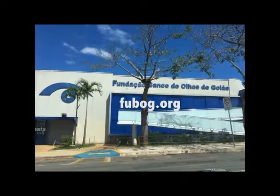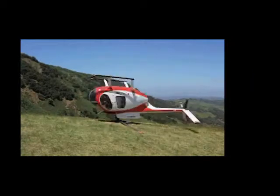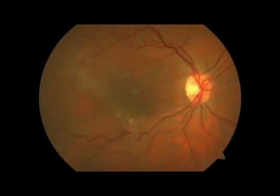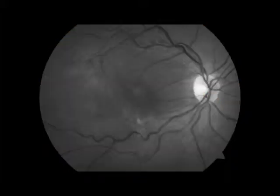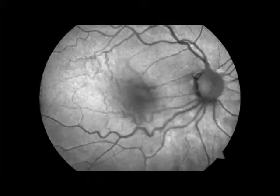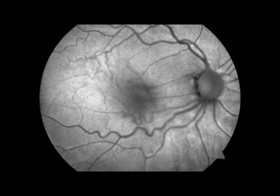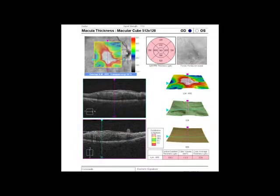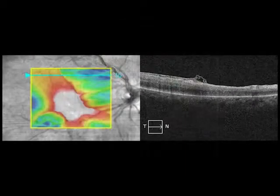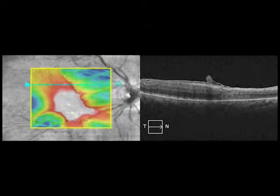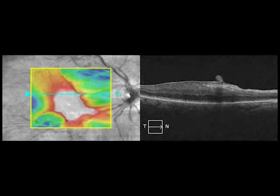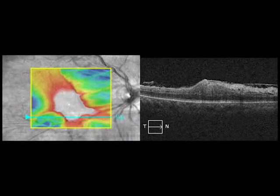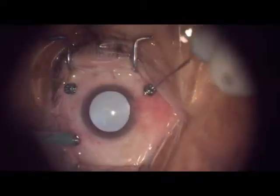This is an inverted vitrectomy epiretinal membrane peel with brilliant blue. These are the OCTs and FAs from the patient with epiretinal membrane. On the movie OCT you notice the epiretinal membrane crossing the macular area and it is full thickness. It also causes a great macular edema due to traction.